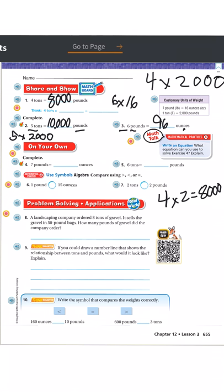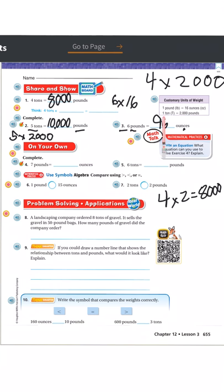When converting any customary unit, it's really important to look at the conversion chart. With customary units of weight, you only have three things to think about. You can probably remember that one pound is 16 ounces and one ton is 2,000 pounds, so you may not even need the chart.